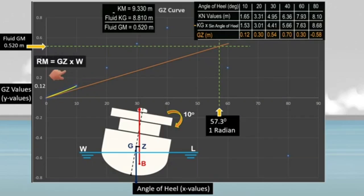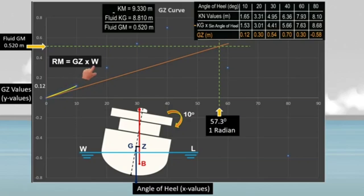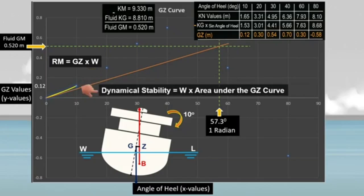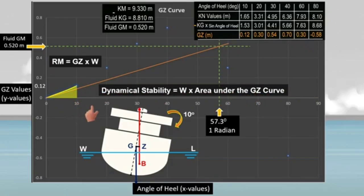To determine the moment of statical stability, or righting moment, multiply the righting lever at 10 degrees angle of heel — which is 0.12 meter — by the ship's displacement. To determine the dynamical stability, multiply the ship's displacement by the area under the GZ curve. This is the area under the GZ curve at a 10-degree angle of heel; we can determine this area using Simpson's rule, and we will do calculations when we reach 30 and 40 degrees angle of heel.